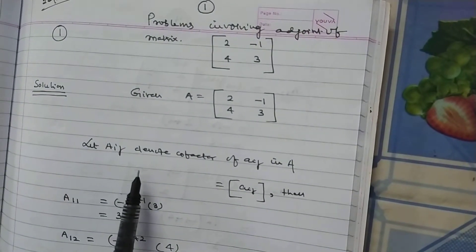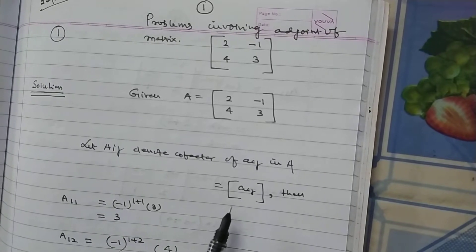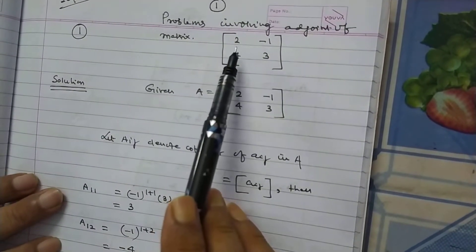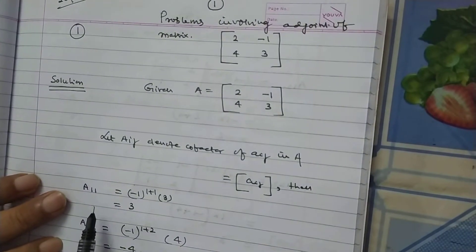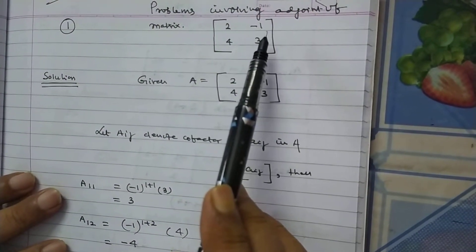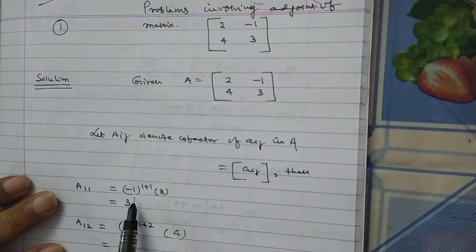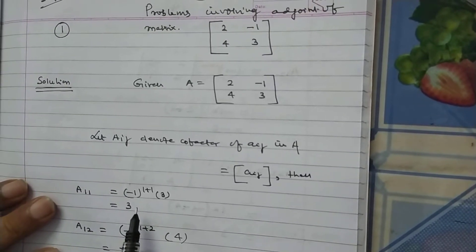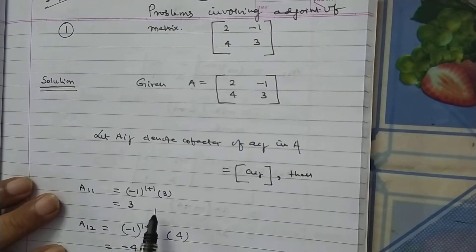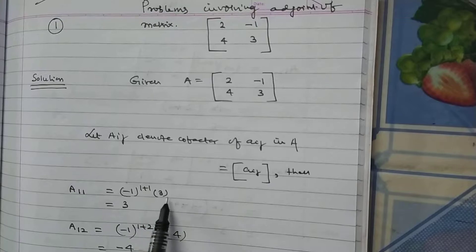Now, suppose A_ij denote cofactor of elements of matrix A. Now, we want to find cofactor of 2. It is considered as A11, capital A11. We cancel the elements of first row and first column and put the sign minus 1 to the power i plus j. It will determine the sign of each element of matrix A. And this is known as minor. So, minor into its sign is equal to cofactor.